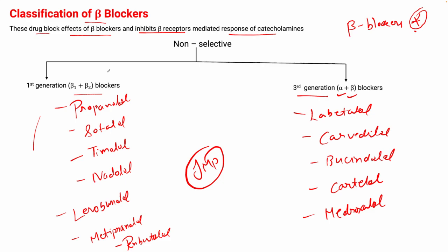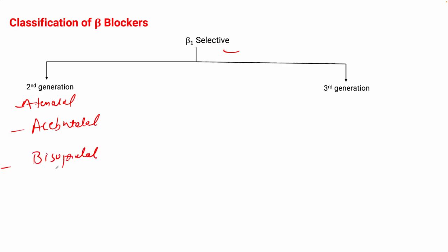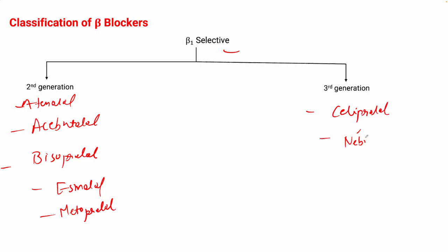Now we will see the beta-1 selective second generation beta blockers. Examples are atenolol, acebutolol, bisoprolol, esmolol, and metoprolol. The third generation beta-1 selective blockers include celiprolol, nebivolol, and betaxolol. So these are all the beta-1 selective second generation and third generation beta blockers.